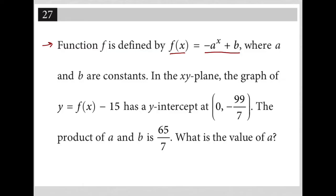In the xy plane, the graph of y equals f(x) minus 15 has a y-intercept of 0, negative 99 over 7. Let me get started.